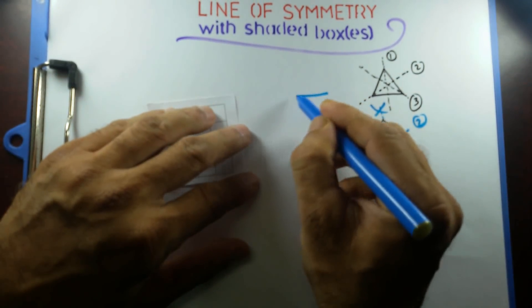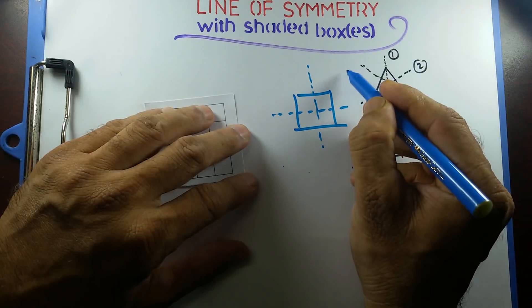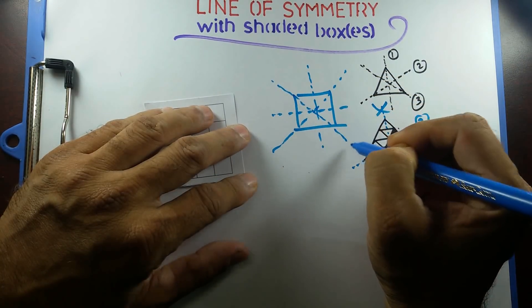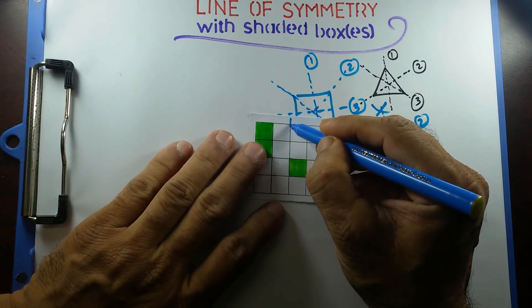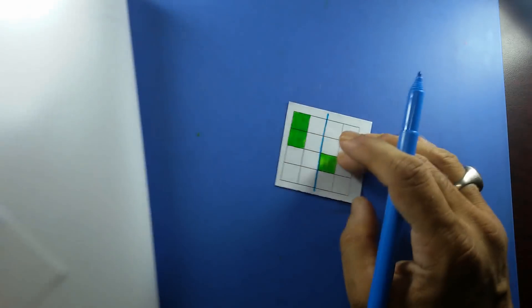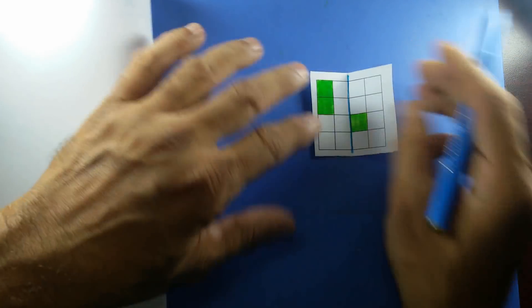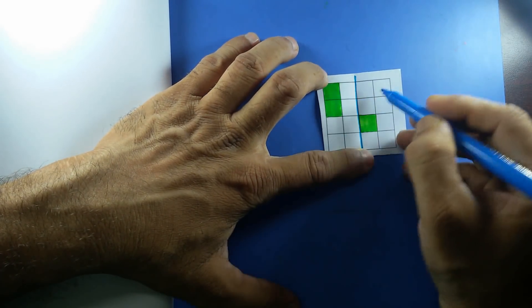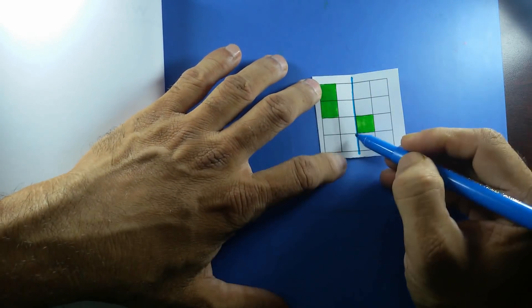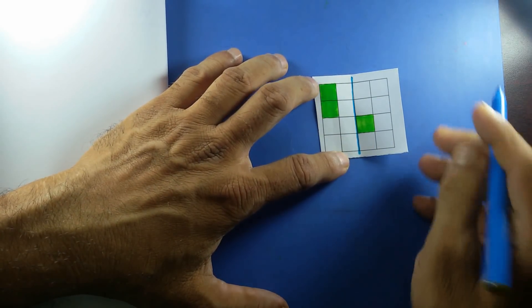Now let's try a square. I hope you remember the lines of symmetry of squares. If I have this square, there are four lines of symmetry: one is vertical, another one is horizontal, and there are two diagonal lines of symmetry — so one, two, three, and four. Let's try the first one. If I draw this vertical line of symmetry and fold through it, this square is going to fall on a non-shaded box, and these two are going to fall over here — so to make this one line of symmetry, I have to shade three boxes. But the question is asking to shade only one box, so this is not good.